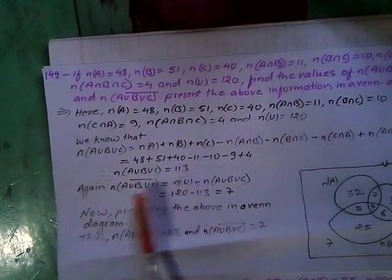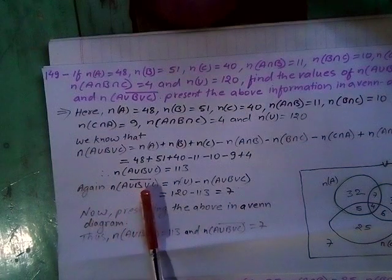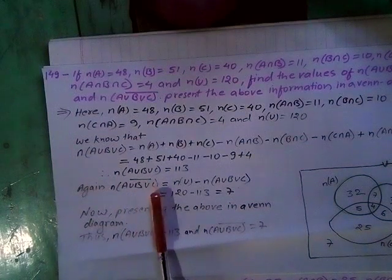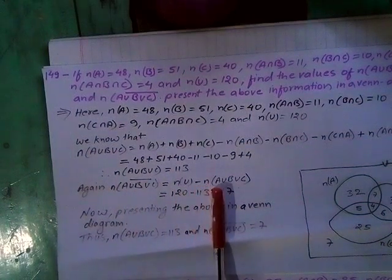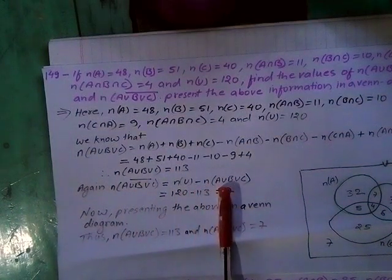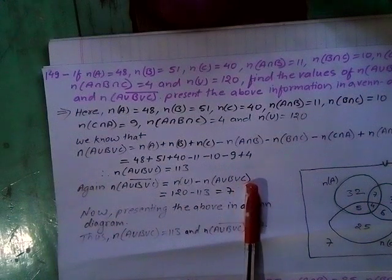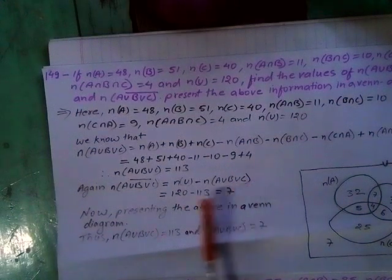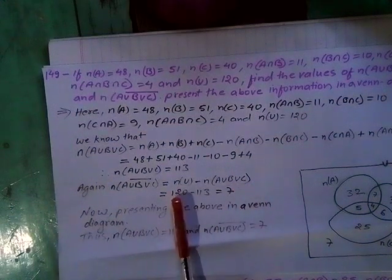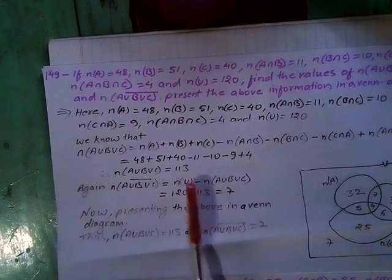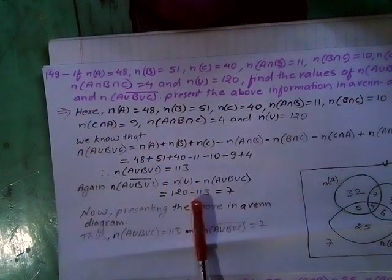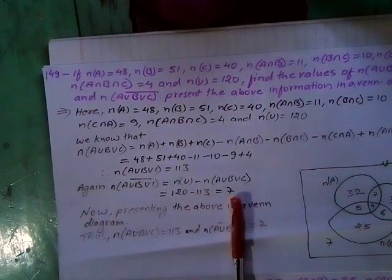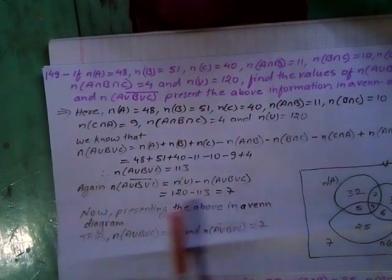N A union B union C equals 113. Then N A union B union C complement equals N U minus N A union B union C. N U is given as 120, so 120 minus 113 equals 7.